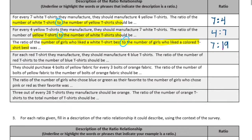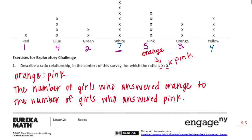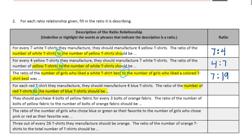For each red t-shirt they manufacture, they should manufacture 4 blue shirts. The ratio of the number of red t-shirts to the number of blue t-shirts — highlight 'number of red t-shirts to the number of blue t-shirts.' Red needs to be first: red is 1, blue is 4. So our ratio is 1 to 4.